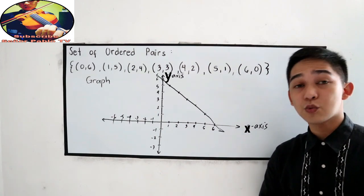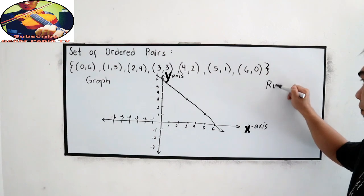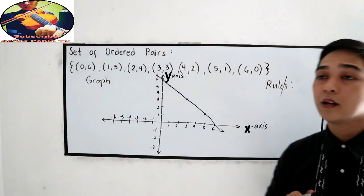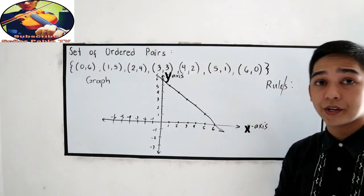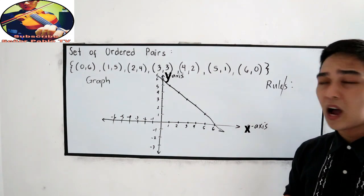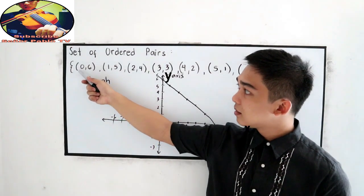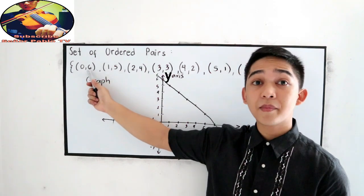Now, let us proceed to the last one. We have the rule. In this case, take a look at our x-coordinate and y-coordinate. So, our rule is, if I am going to add the abscissa and the ordinate, the sum is 6.